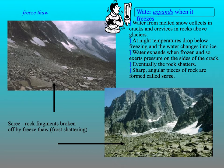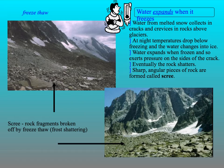Freeze-thaw is when meltwater from the snow collects in cracks and crevices in the rocks above a glacier. At night, as the temperature gets colder, this water freezes. When water freezes it expands, so that makes the crack slightly bigger. This process repeats itself over and over, and then eventually the rock shatters, and we're left with sharp angular pieces of rock called scree, and we'll see that demonstrated in the next diagram.